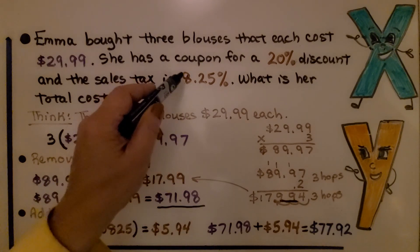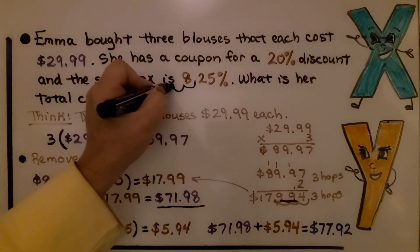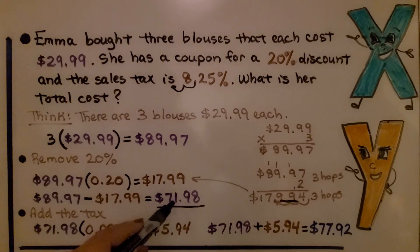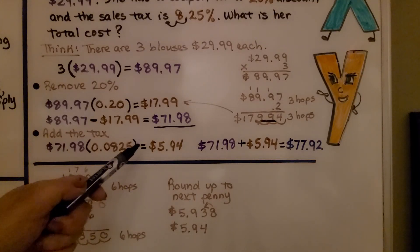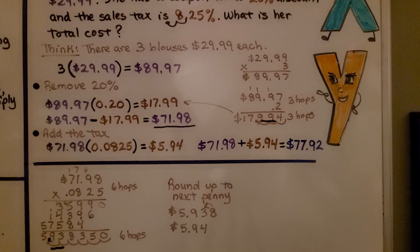Now we add the tax. The tax is 8.25%, so we convert it to a decimal: move the decimal two places left with a zero placeholder, giving us 0.0825. We multiply $71.98 times 0.0825 and get $5.94 in tax. When I multiplied, I got 5.93835 — since this is money, the 8 told the 3 to round up to 4, giving us $5.94. Adding the tax to the sale amount: $71.98 plus $5.94 equals $77.92 total.